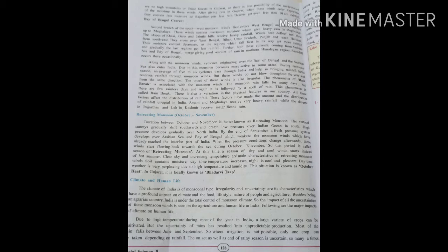These winds do not blow throughout the year and from the same direction. The onset of these winds is also irregular. The phenomenon considered as rain break is associated with the monsoon winds. The monsoon rain falls for many days, but some days are rainless. Again it is followed by a spell of rains. There is also variation in the physical features in the country. All these factors affect the distribution of rainfall and have made the amount and distribution of rainfall unequal in India.